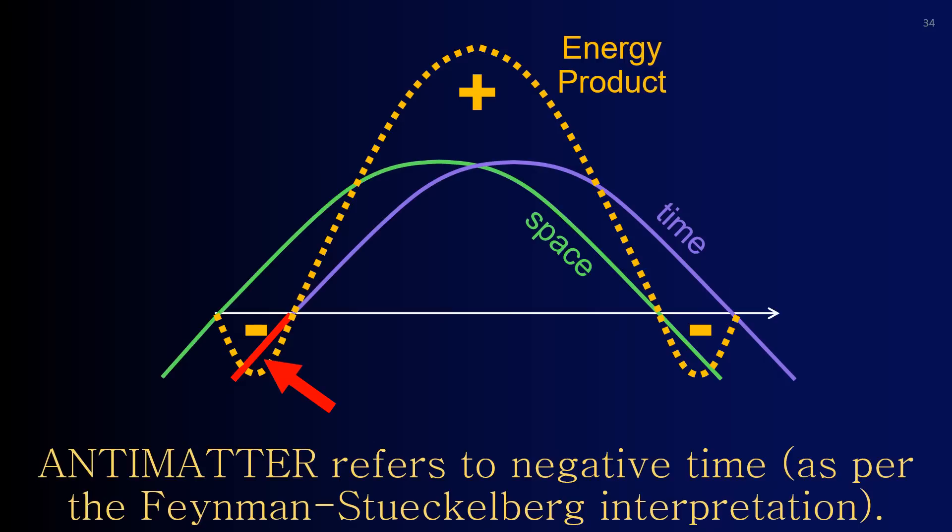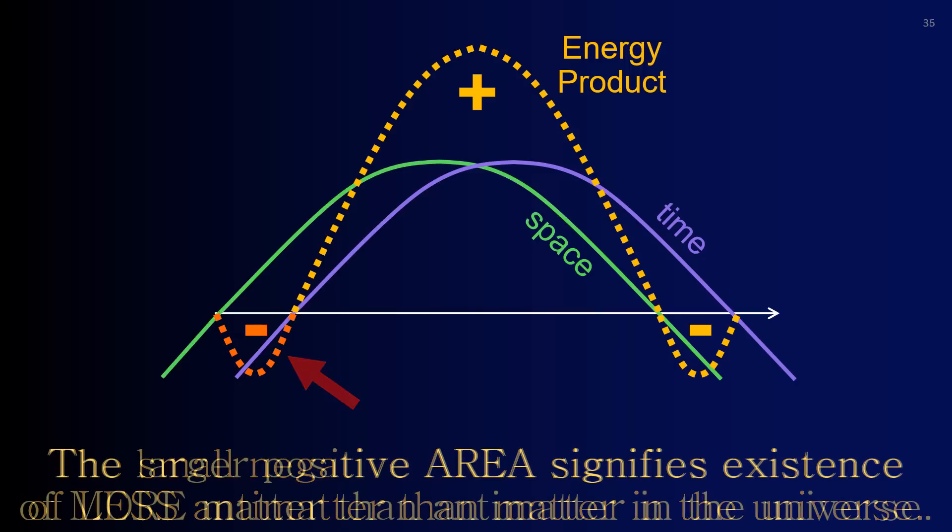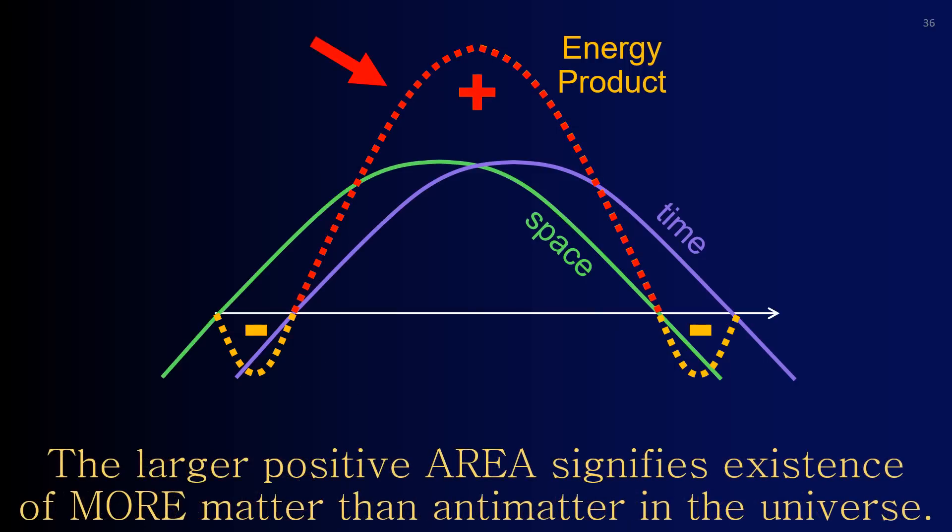Antimatter refers to negative time, as per the Feynman-Stuckelberg interpretation. The small negative area signifies existence of less antimatter than matter in the universe. The larger positive area signifies existence of more matter than antimatter in the universe.